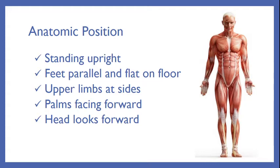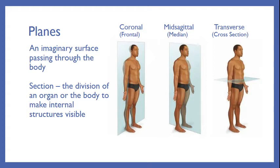A lot of our models are going to be in this position. The model on this slide is also in anatomical position — you'll notice that his palms are facing forward. A plane is an imaginary surface passing through the body. Here we see three pictures. The one on the left is the coronal plane, or frontal plane — it is a plane that will pass through the body and separate the front from the back.